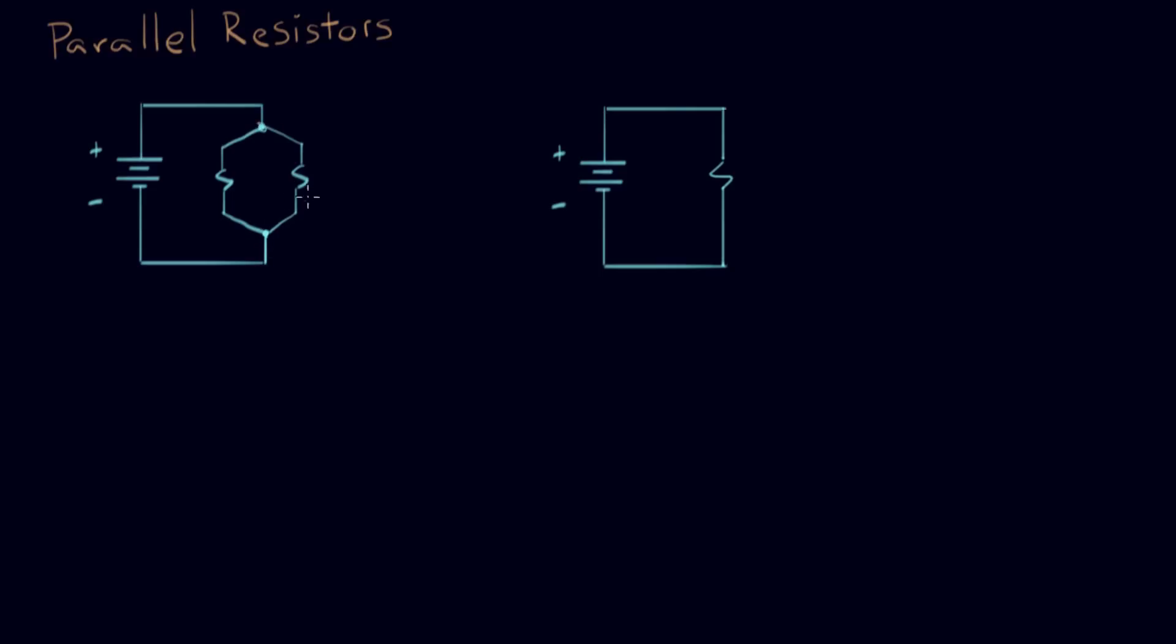We also showed that these two resistors could be replaced by a single resistor. We labeled this one R1, this is R2. We showed that we could replace R1 and R2 by an equivalent parallel resistor with this expression here for two resistors.